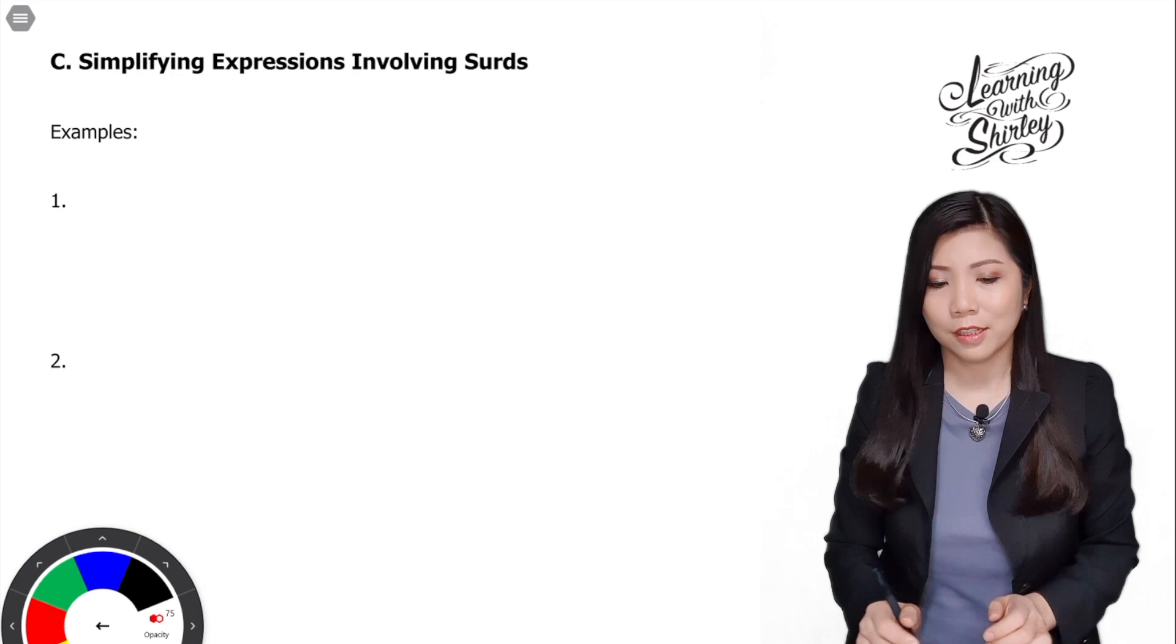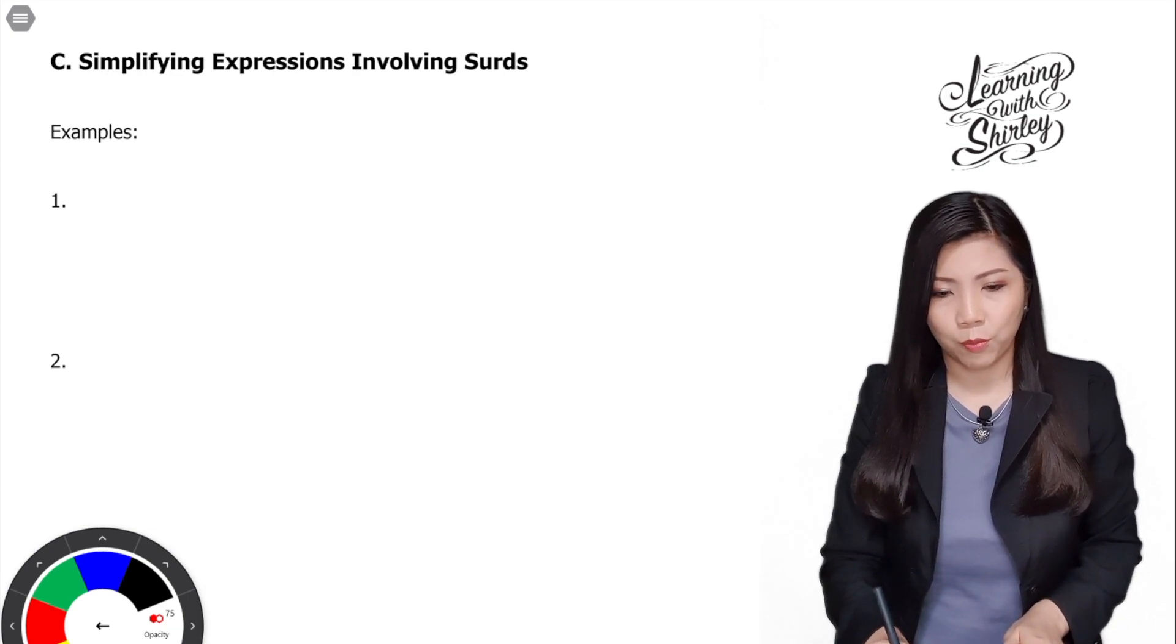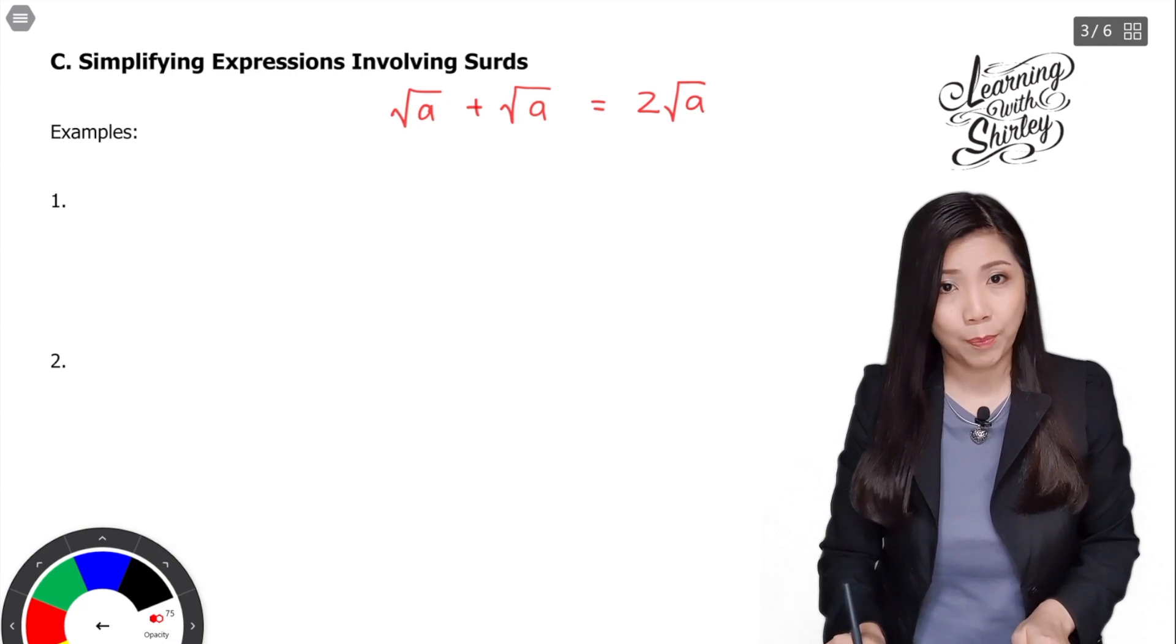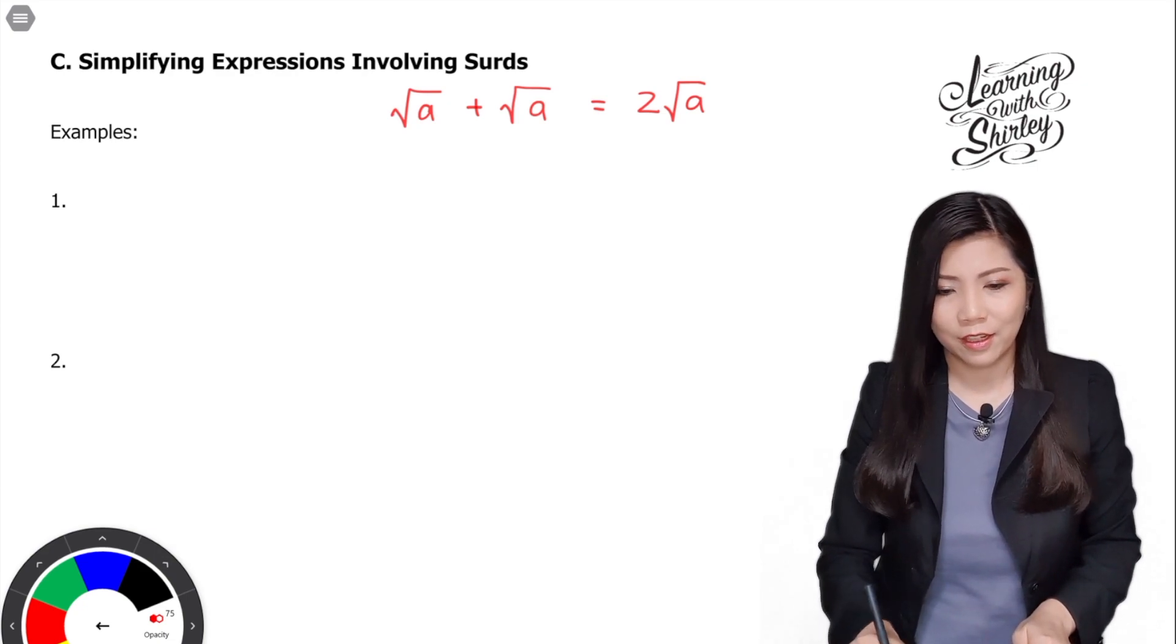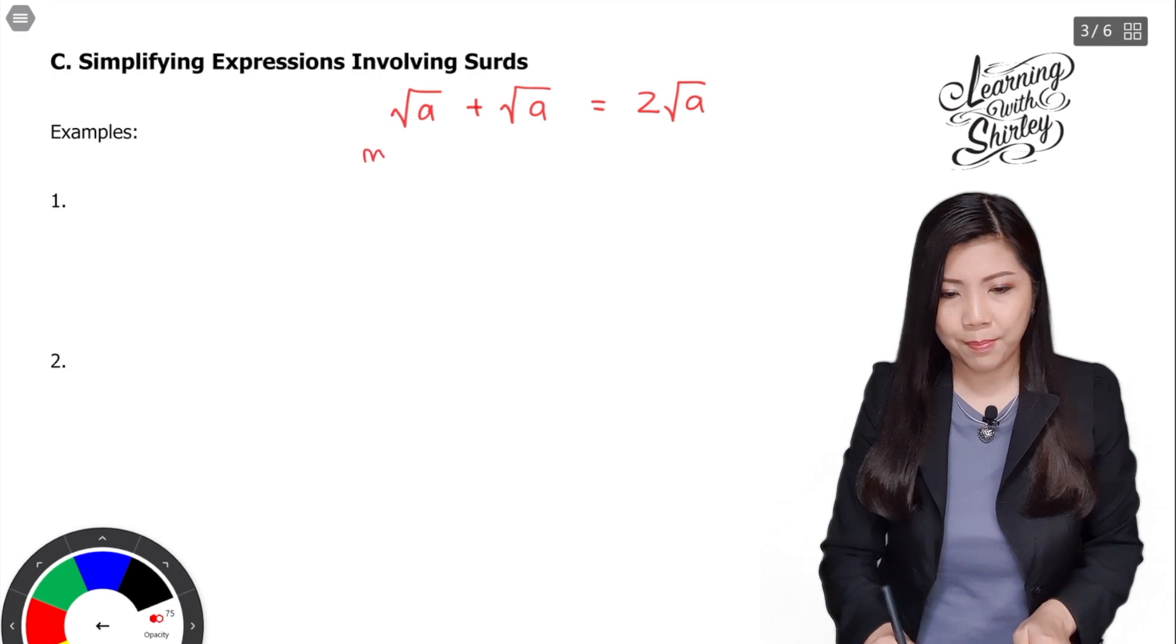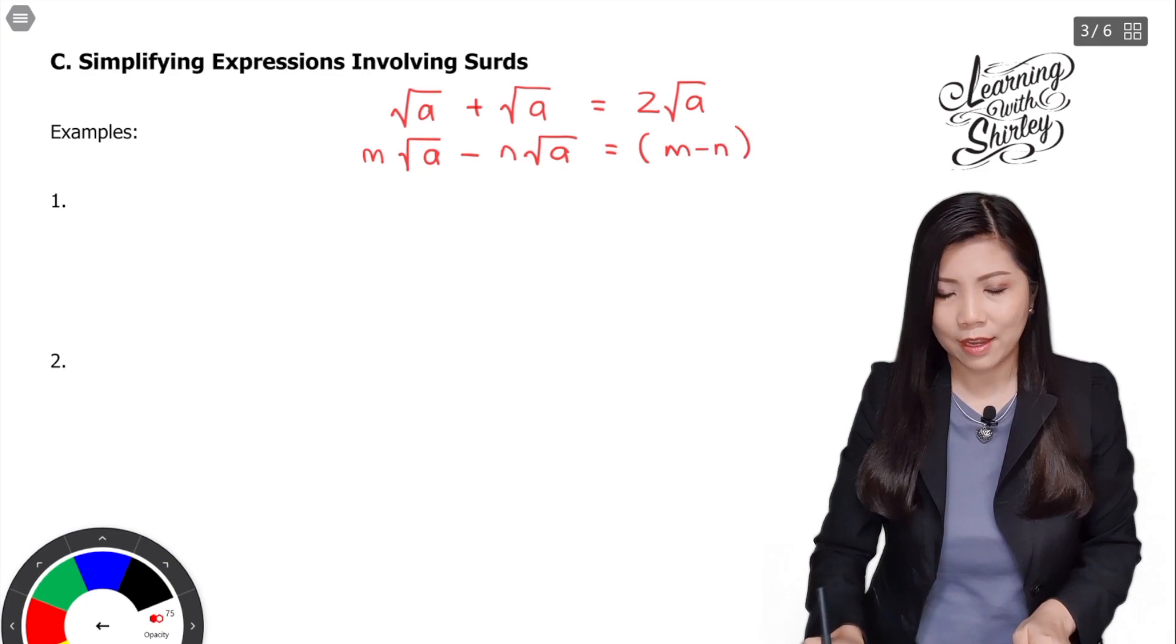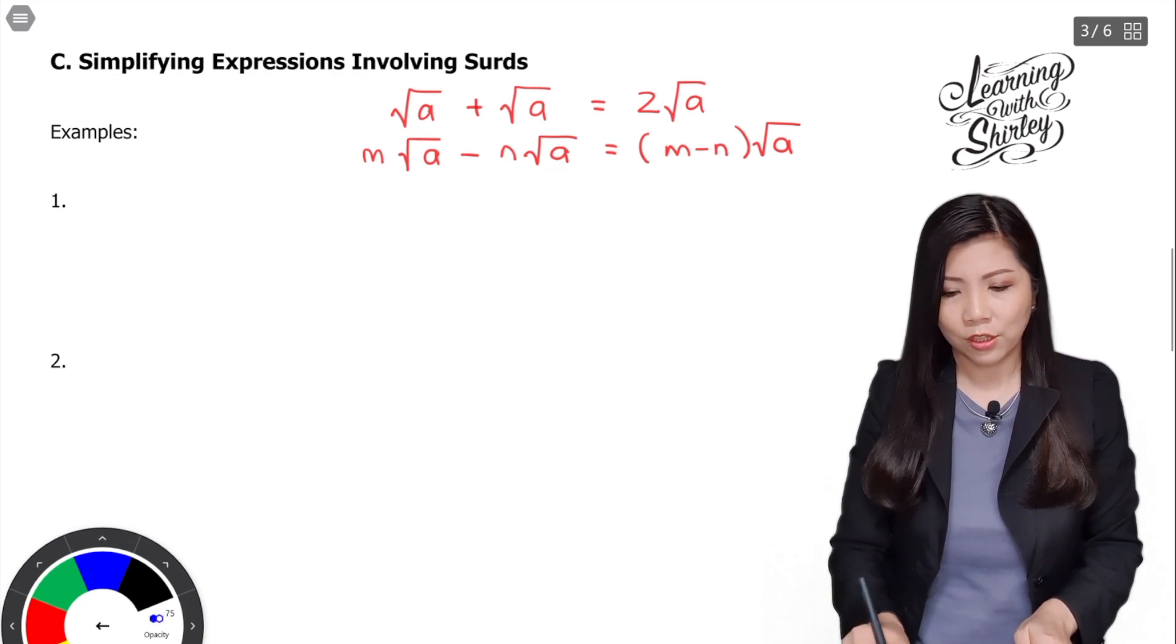The next part is simplifying surds. So let's look at this formula: surd A plus surd A is equal to 2 surd A. It's like an apple plus another apple, you get 2 apples. Next, we have M surd A minus N surd A is equal to bracket M minus N times surd A. So this is like factorization. Let's look at the example.